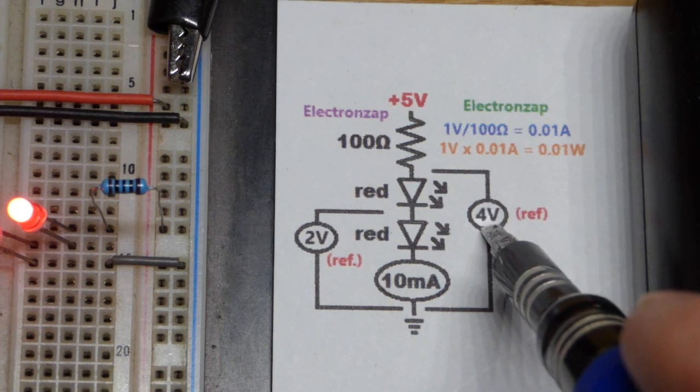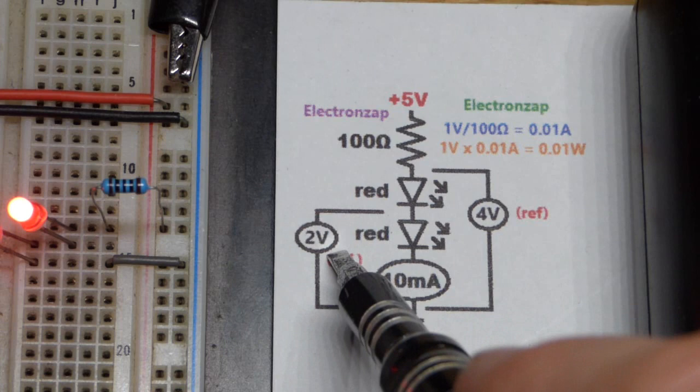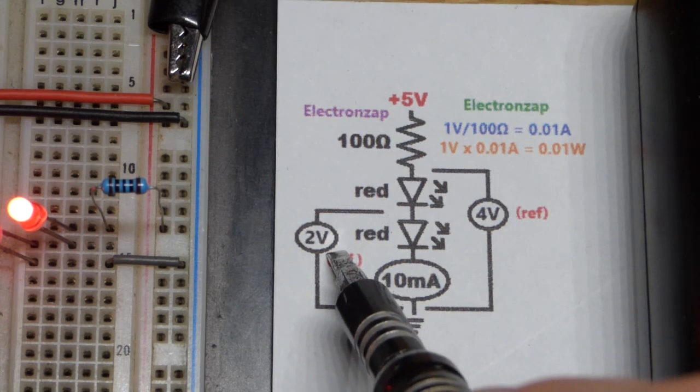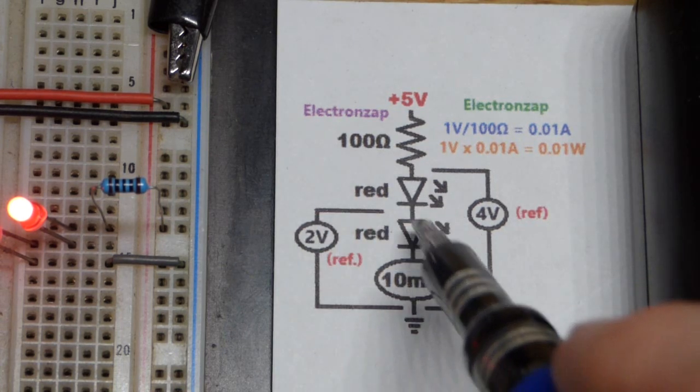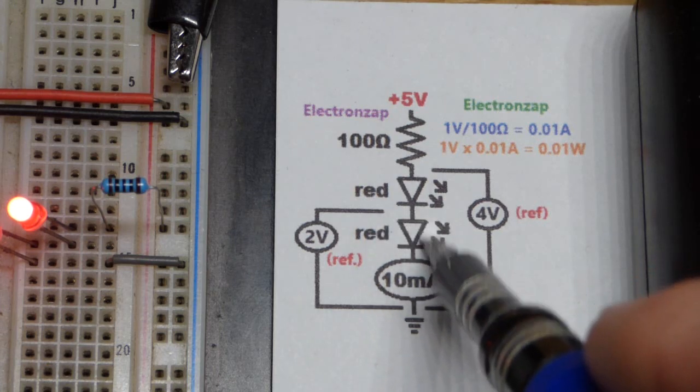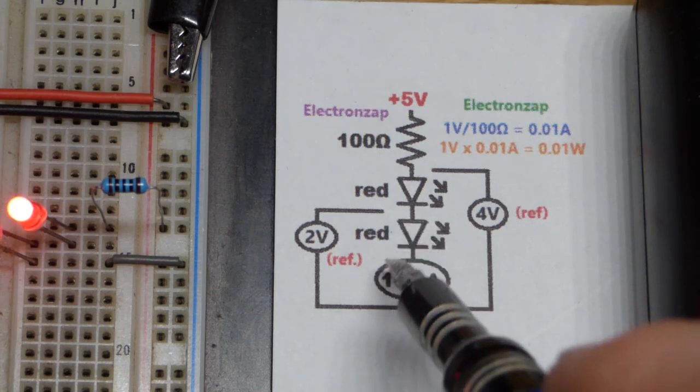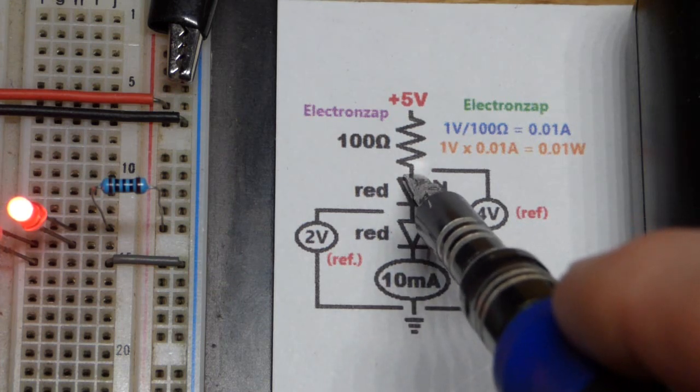Each of these red LEDs drops about two volts. It has a forward voltage of two volts while it's forward biased in the direction it conducts more easily. It needs about two volts before it will even start conducting, and then it builds up about two volts across it while it is conducting.